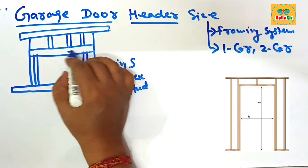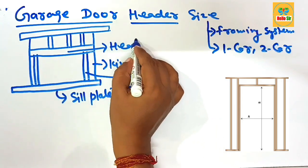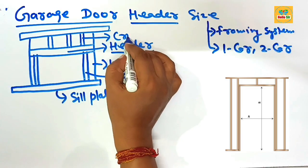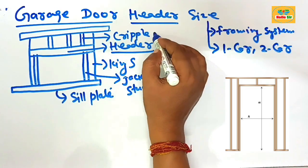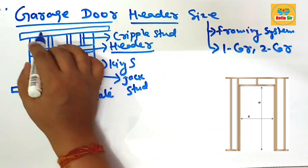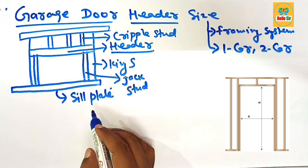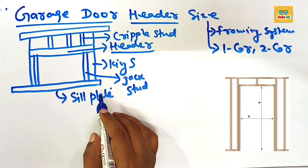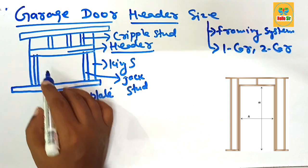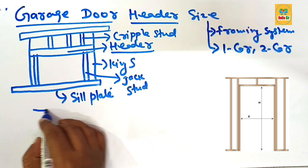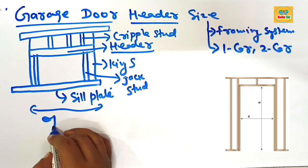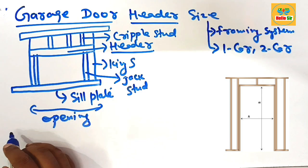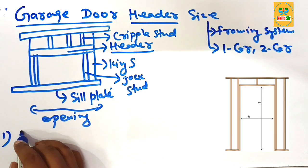The header is placed at this position — this one is the header, and this one is the top plate. Additional support is given by the cripple stud. This one is the king stud, and this one is the jack stud. This is the rough diagram for the garage door header framing system, and this one is the clear opening — the door opening.